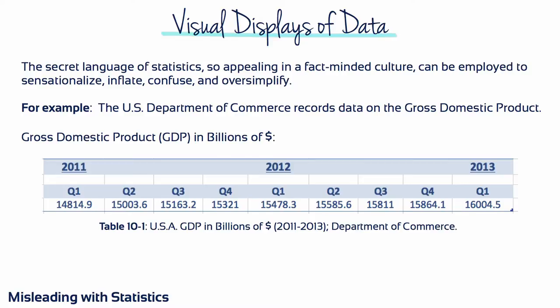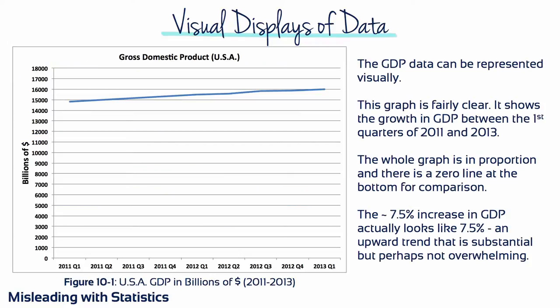For example, Table 10-1 displays the gross domestic product of the United States of America in billions of dollars, from the first quarter of 2011 to the first quarter of 2013. The GDP data can be represented visually. Figure 10-1 is fairly clear — it shows the growth in GDP between the first quarters of 2011 and 2013. The whole graph is in proportion, and there's a zero line at the bottom for comparison. The roughly 7.5% increase in GDP actually looks like 7.5%, an upward trend that is substantial but perhaps not overwhelming.